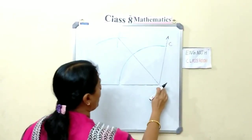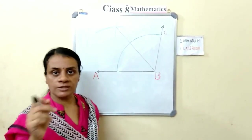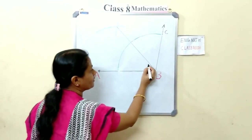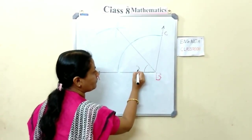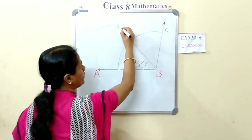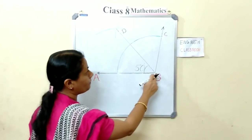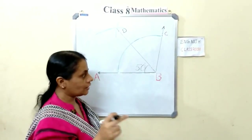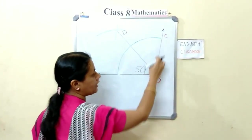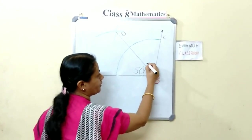If you measure this angle using the protractor, you will get 50 degrees. You can name this point D: angle ABD equals 50 degrees and angle CBD is also 50 degrees.